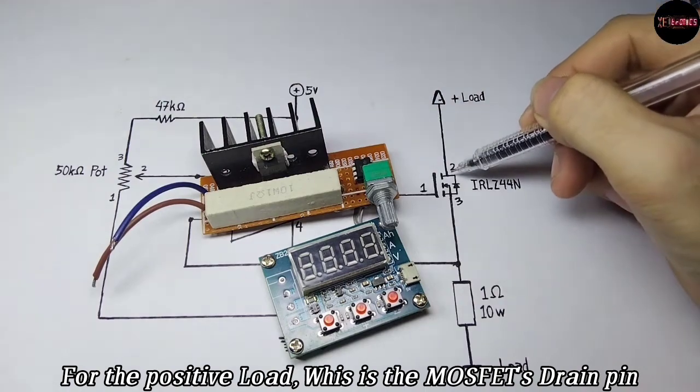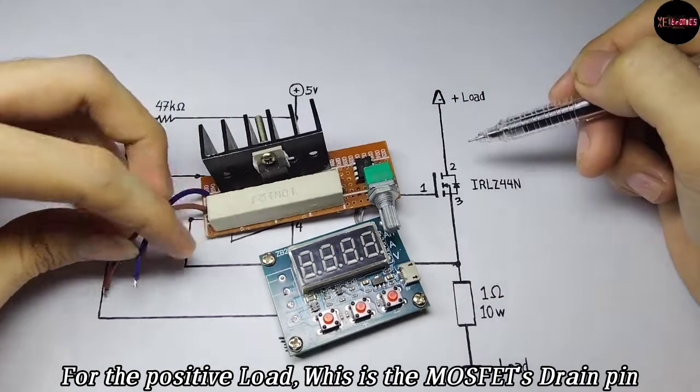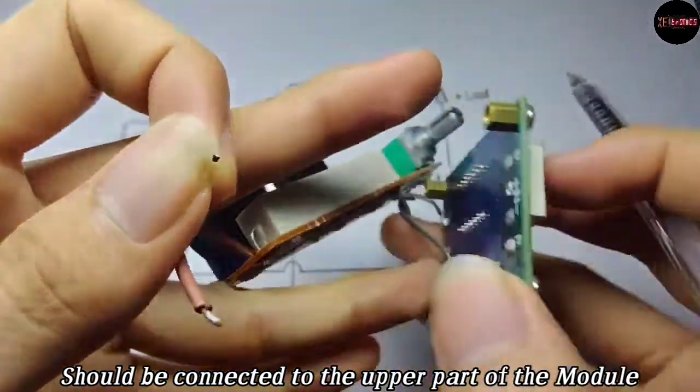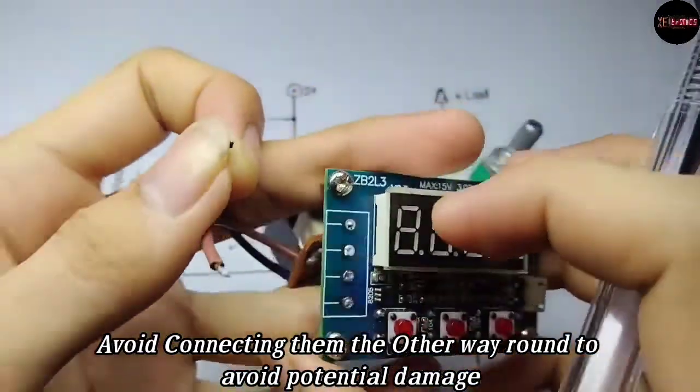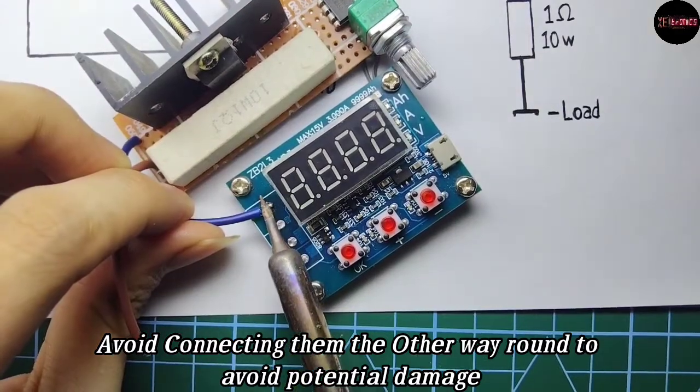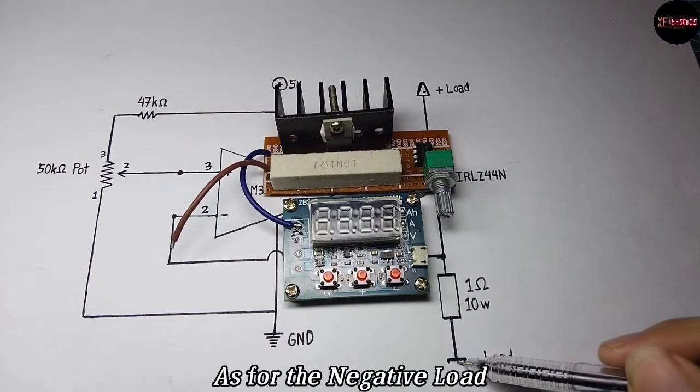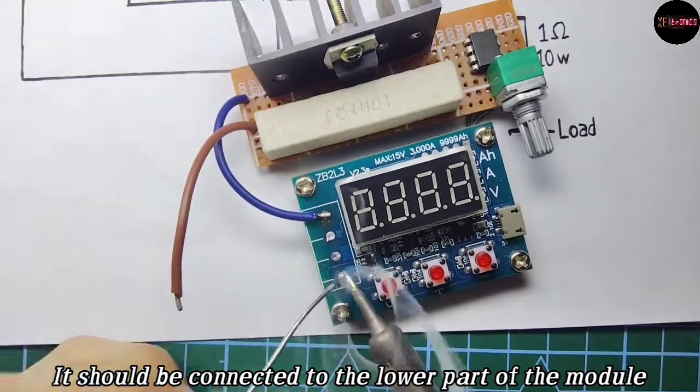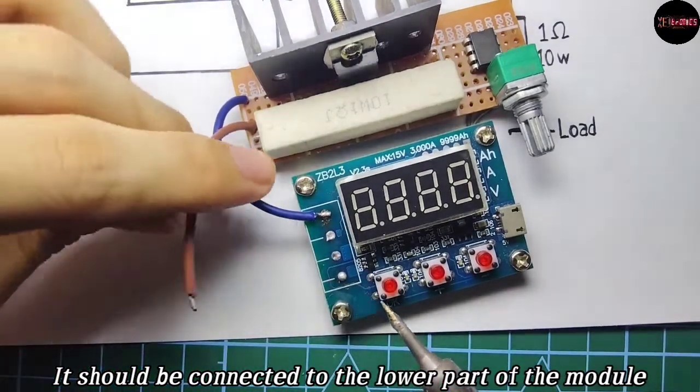For the positive load, which is the MOSFET's drain, should be connected to the upper part of the module. Avoid connecting them the other way around. As for the negative load, it should be connected to the lower part of the module.